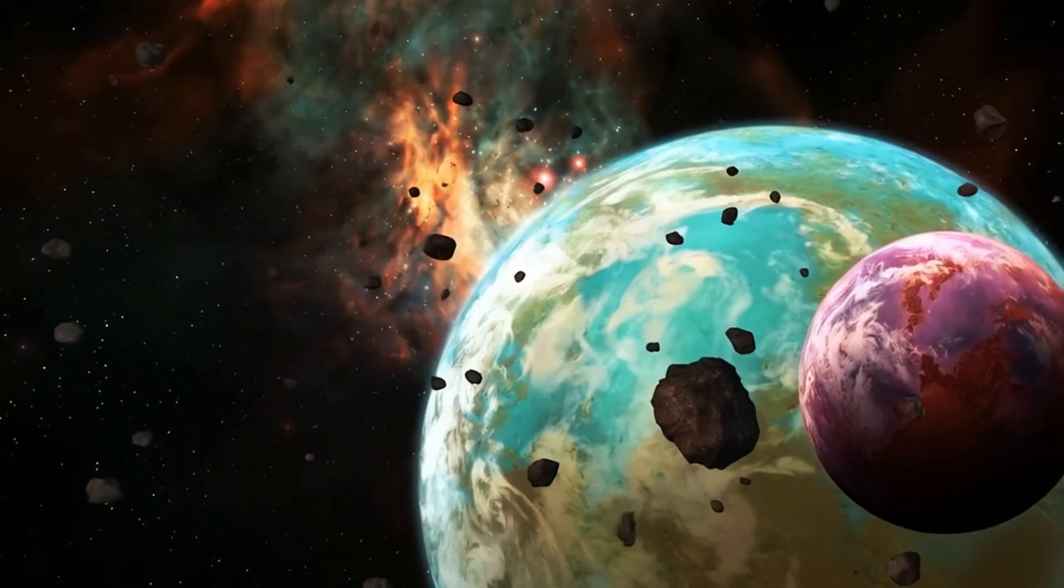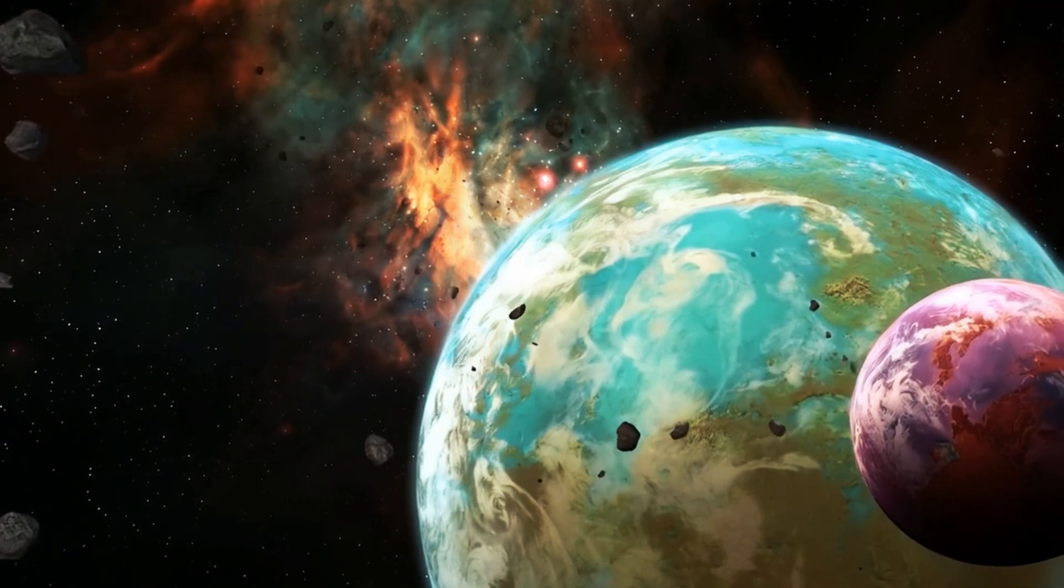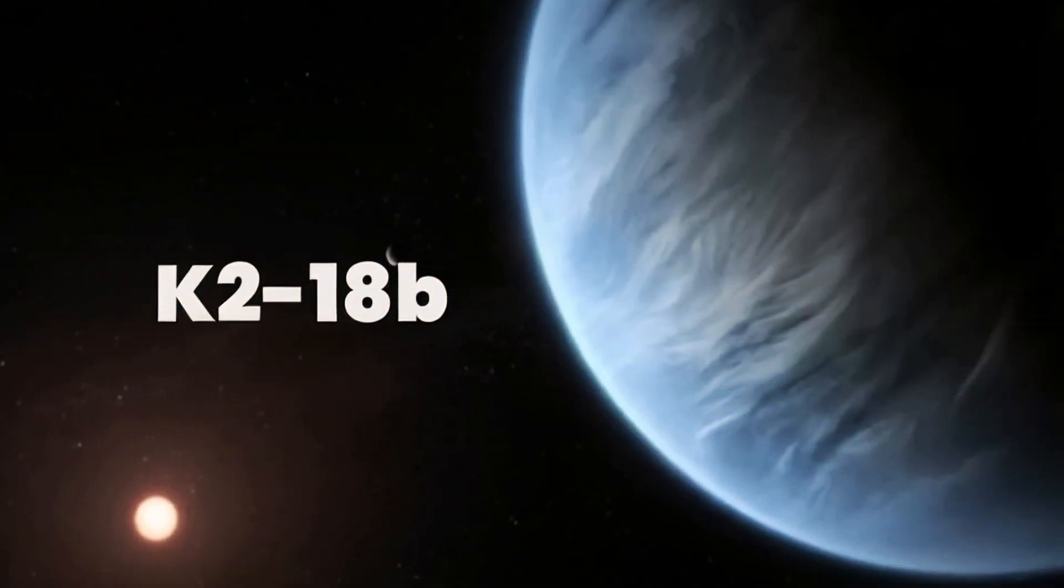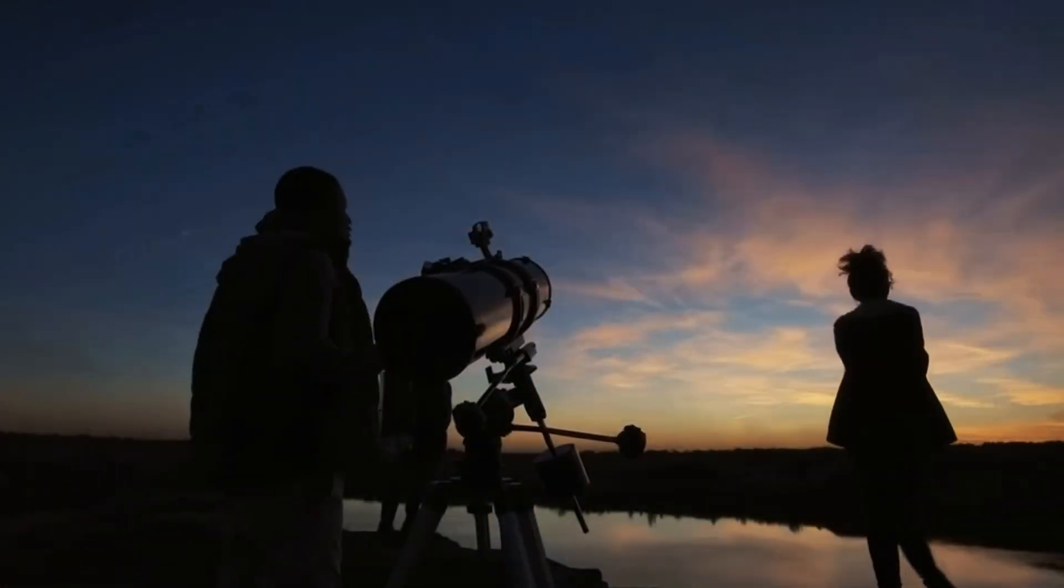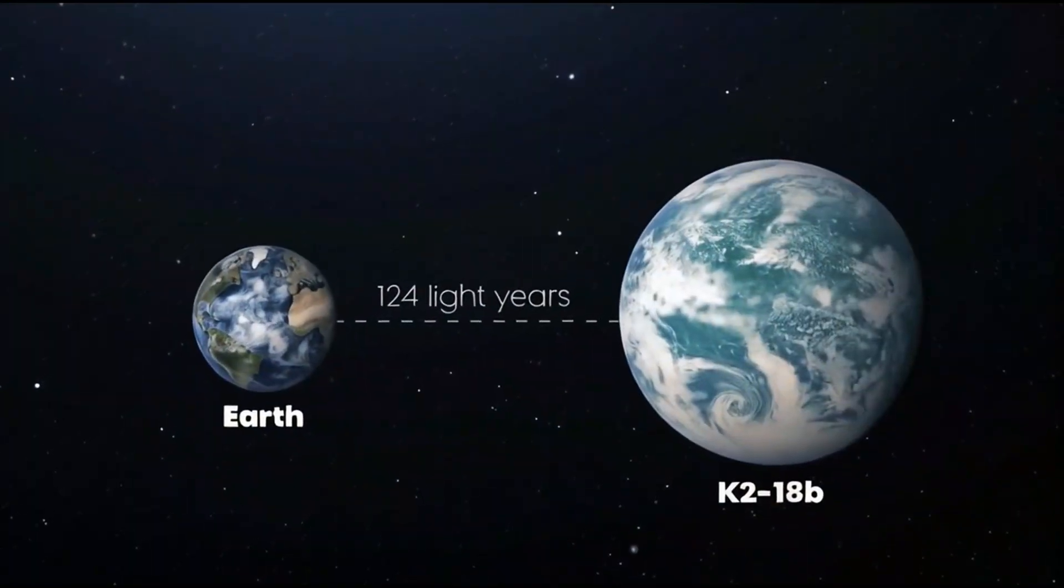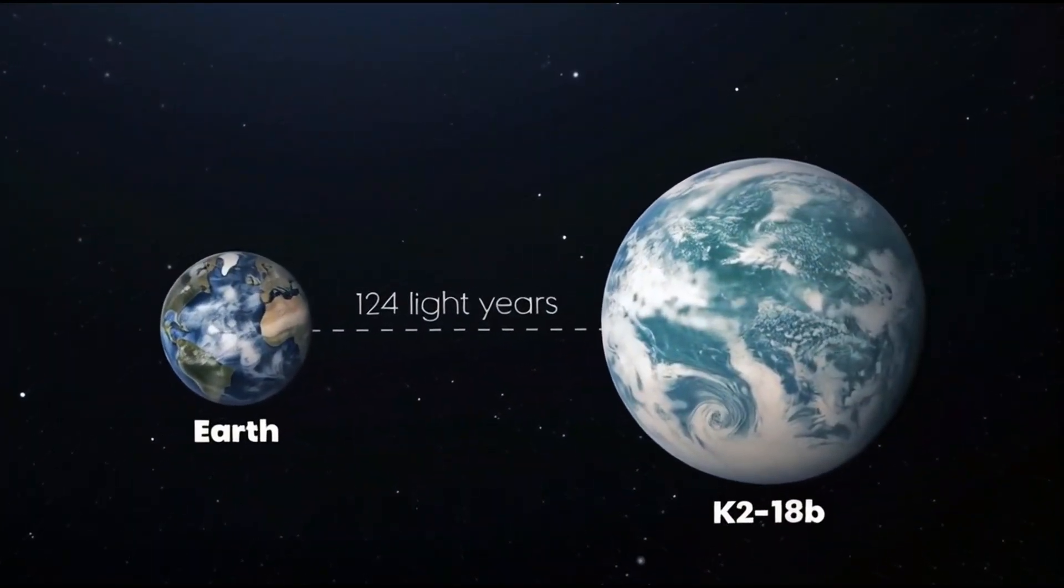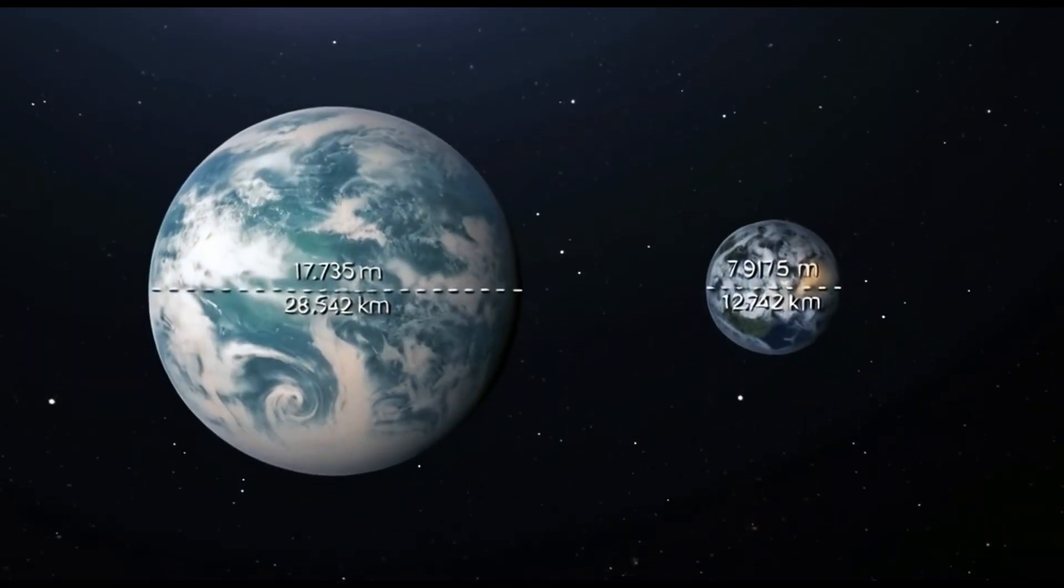One such exoplanet discovered by Kepler that has recently generated excitement among researchers is called K218b. In September 2019, two scientific teams independently announced that they found signs of liquid water in the planet's atmosphere. Situated 124 light-years away from Earth, K218b is about eight times the mass of Earth and three times as big.